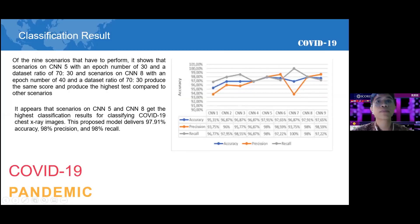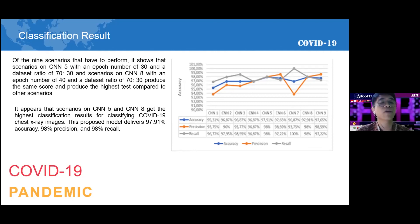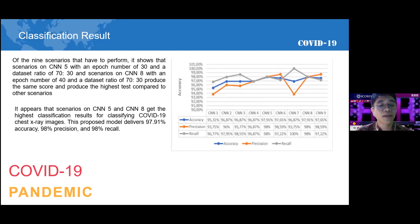The following are the results of the classification using the confusion matrix with the scenarios compared previously. In this experiment, we tested five times for each scenario and used the best result as the benchmark. Of the nine scenarios performed, scenarios CNN-5 and CNN-X achieved the highest classification results for classifying COVID-19 X-ray images. The proposed method delivers 97.91% accuracy, 98% precision, and 98% recall.